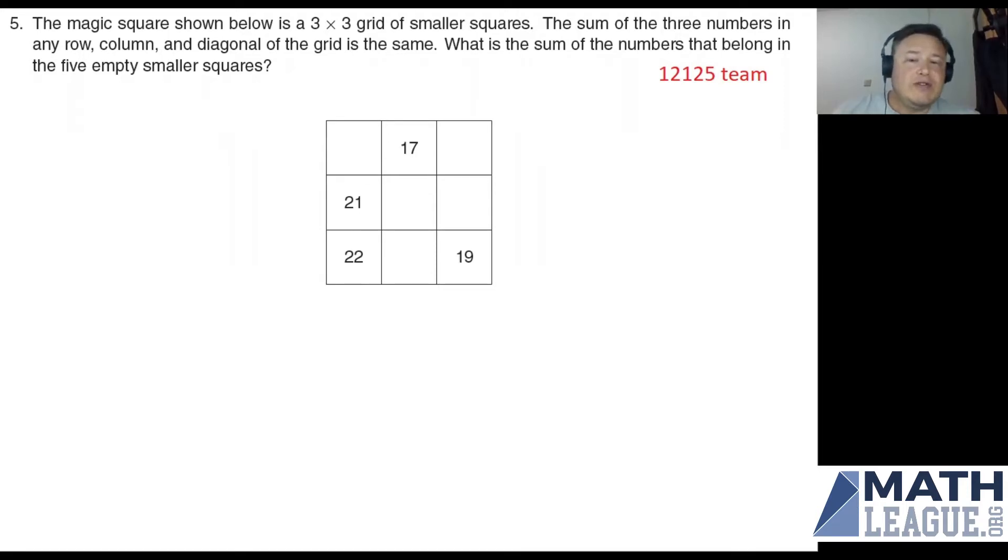What we want to do is identify squares that we can put information into. The first one I'm going to do is the top right square. The way we want to do this is to take a look at the row across the top and the first column. I don't know what goes in this upper left corner, but it doesn't matter. It's something. And that something plus 21 plus 22 is going to be the same thing as that something plus 17 plus the top right corner.